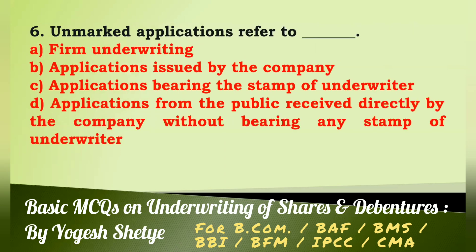Question 6: Unmarked applications refers to — (a) firm underwriting applications, (b) applications issued by the company, (c) applications bearing the stamp of underwriter, (d) applications from the public received directly by the company without bearing any stamp of underwriter. Answer: Unmarked applications are applications from the public received directly by the company without bearing any stamp of underwriter. Answer B.